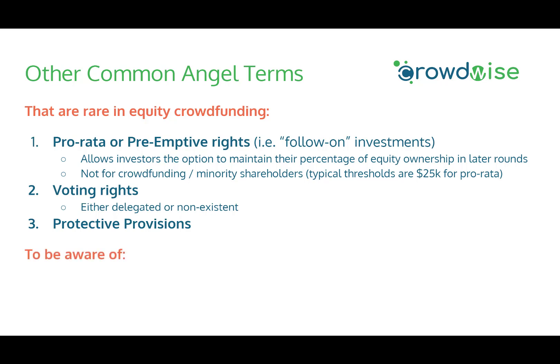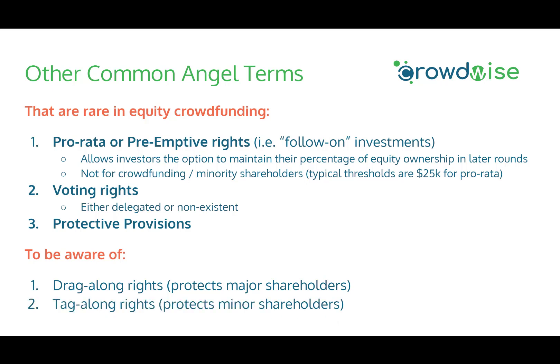Other common angel terms include drag-along rights, which protect major shareholders — in the event they identify a buyer and are willing to sell a stake, it prevents smaller shareholders from blocking that sale. The opposite are tag-along rights, which protect minor shareholders so that if a major shareholder finds a buyer, minor shareholders can participate at the same price. Remember, all the terms discussed today are not an exhaustive list — you'll become more familiar with deal terms as you start screening your first deals.